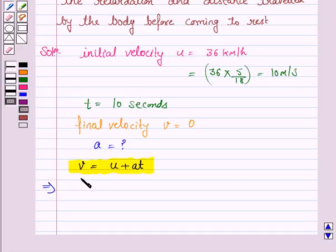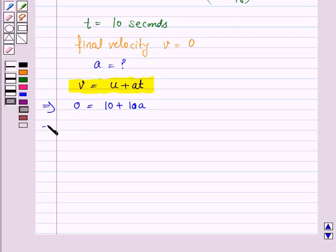We have 0 equals 10 plus 10a. This implies a equals negative 10 divided by 10, that is negative 1. Since a is negative, this is a retardation of minus 1 m/s².